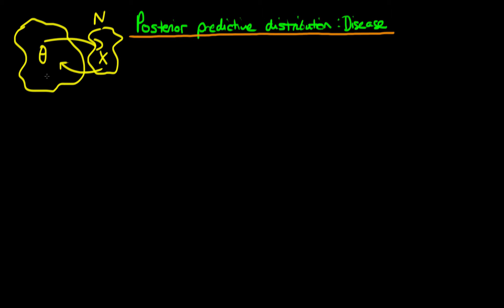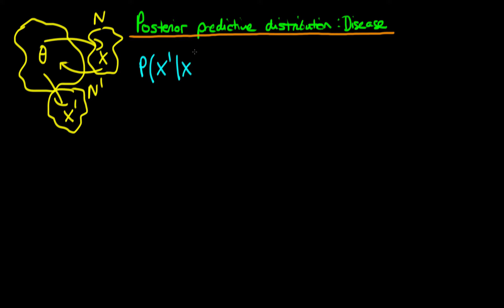Now we are interested in a second sample taken from that population, call it n-primed. We want to predict the likely number of individuals in that new sample, call it x-primed, who actually have the disease. So what we're trying to do is work out the probability density of x-primed given that we've observed x individuals in our first sample.